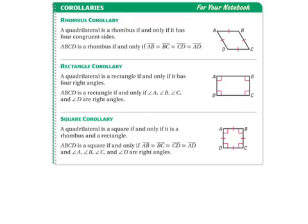Alright, some corollaries. A quadrilateral is a rhombus if and only if it has four congruent sides — ABCD is a rhombus if and only if all of those sides are congruent. Rectangle corollary: a quadrilateral is a rectangle if and only if it has four right angles. It doesn't say anything about the lengths of the sides. A square has to have congruent sides and four right angles.